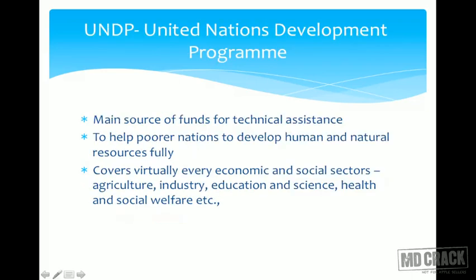UNDP, or United Nations Development Program, is basically the main funding agency for a lot of programs — the main source of funds for technical assistance. It helps poorer nations to develop human and natural resources fully so they do not have to rely on foreign aid. UNDP covers virtually every economic and social sector such as agriculture, industry, education and science, health, and social welfare.